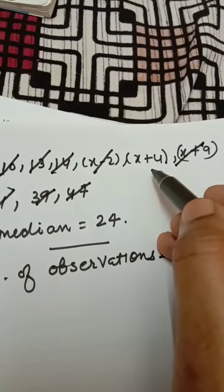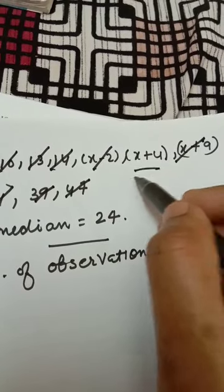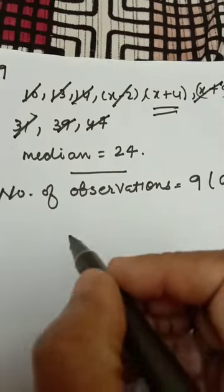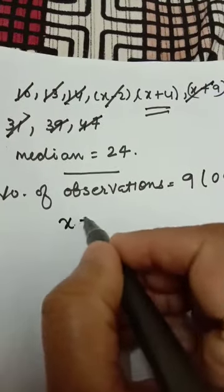Which one you are getting? x plus 4. One left out, that is x plus 4. x plus 4 is the median.